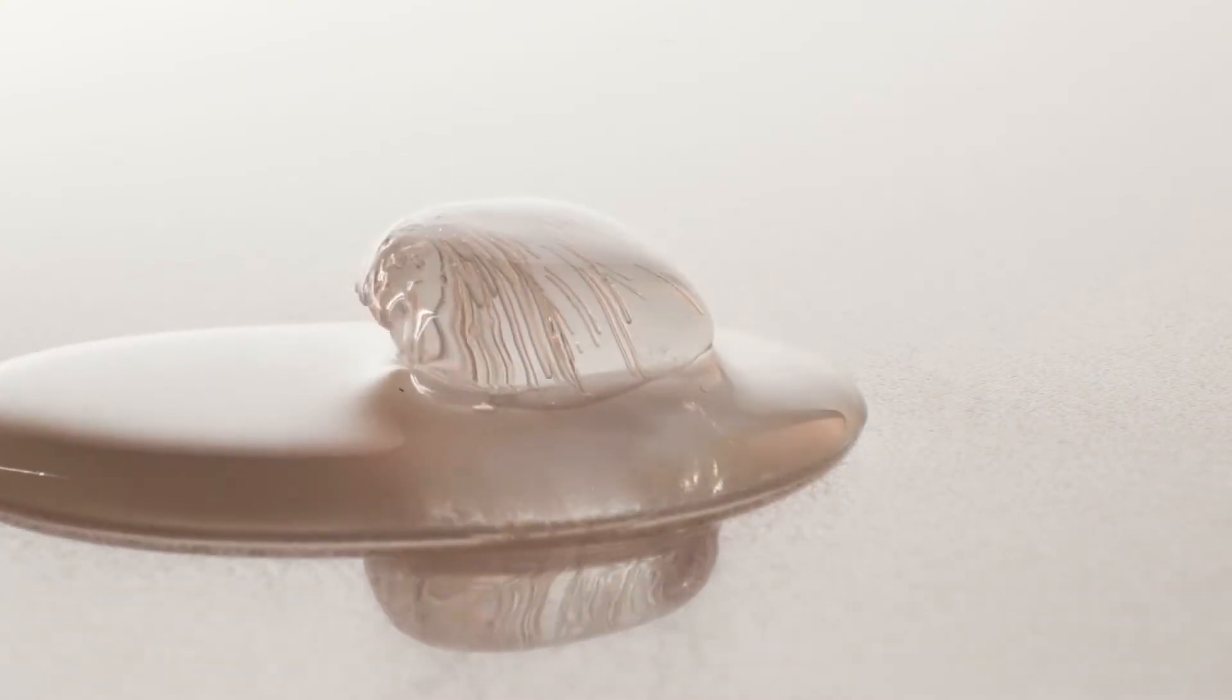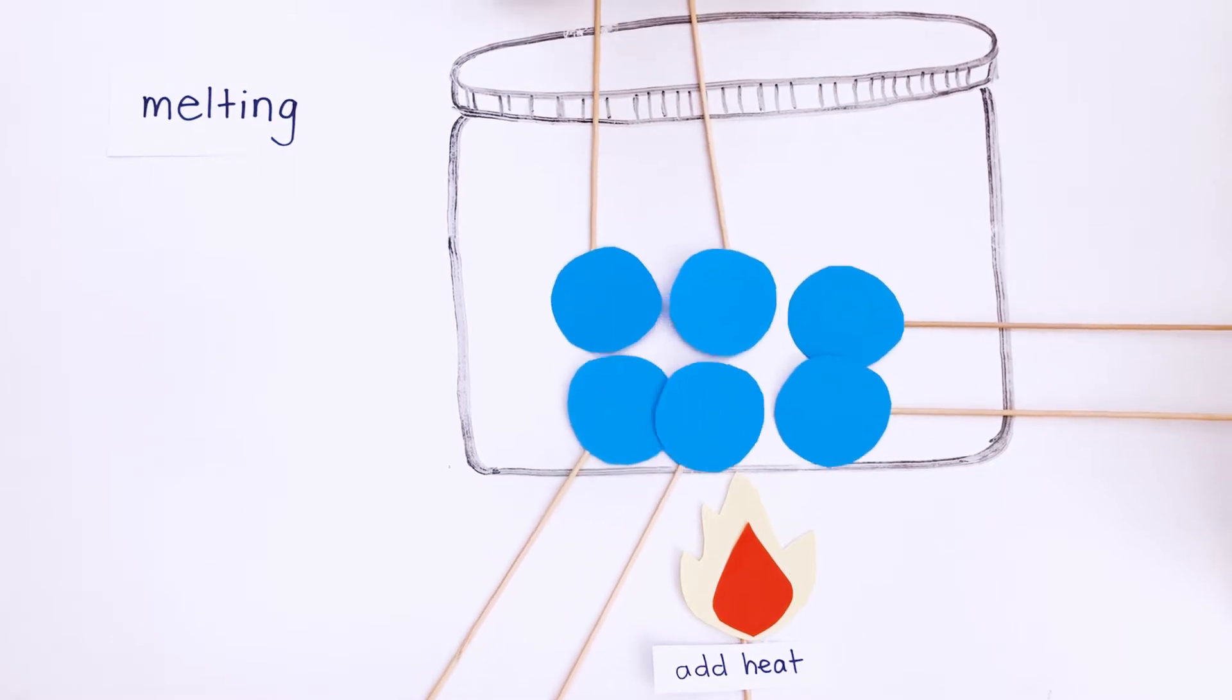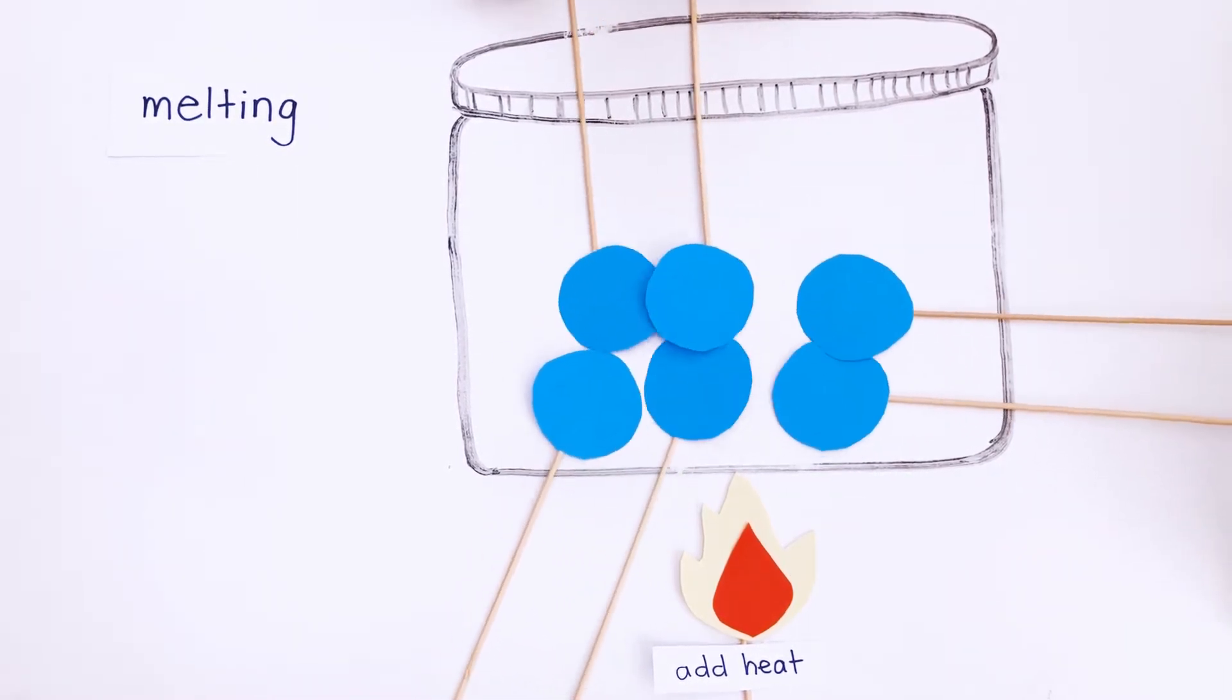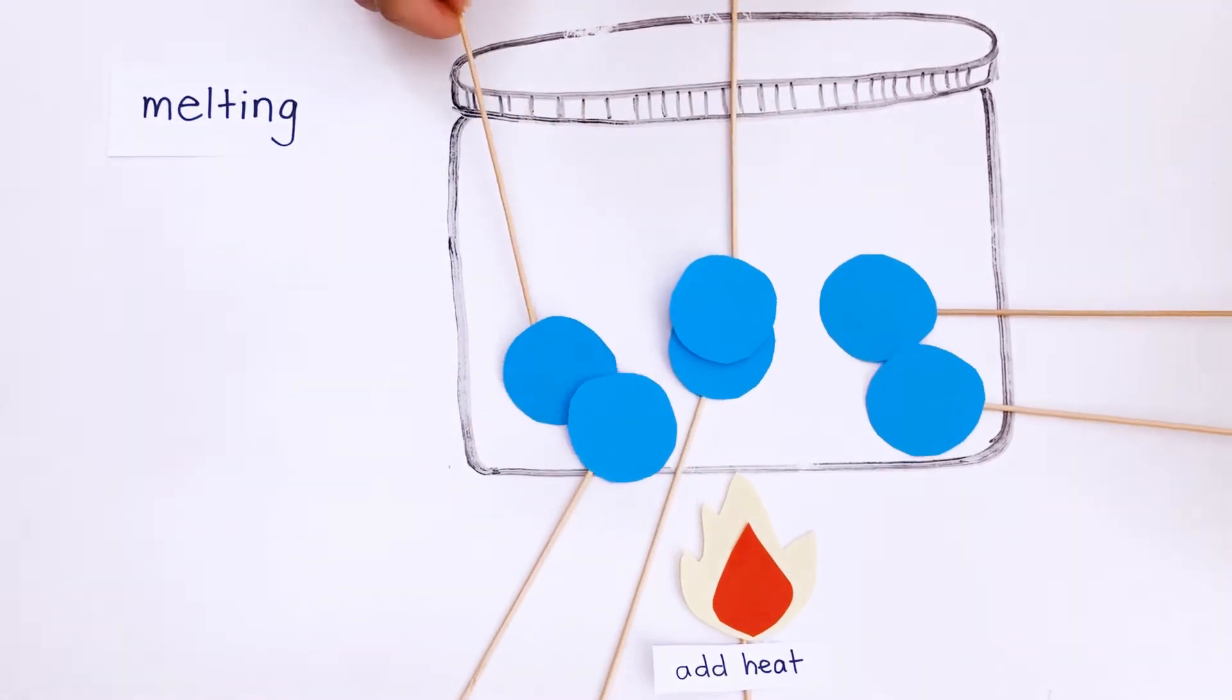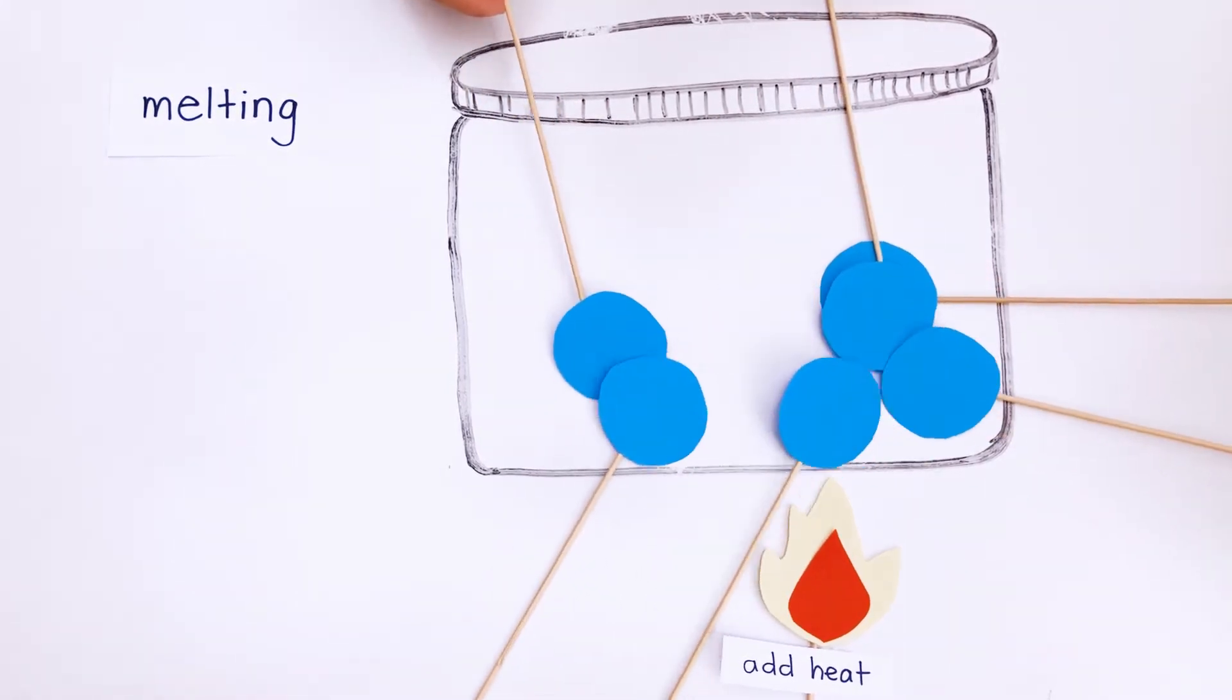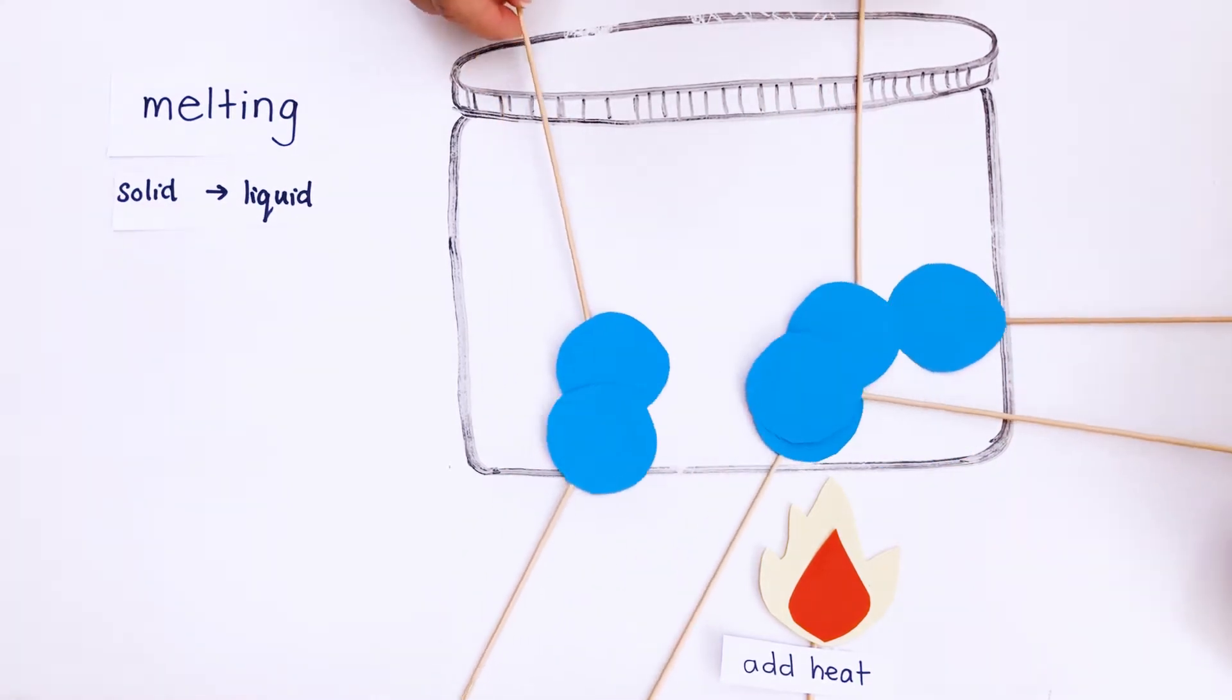Melting. Melting happens because particles in the solid start to vibrate more. Eventually the movement is so strong that the attraction between particles can no longer keep them in fixed positions. The particles begin to move around each other allowing the substance to flow. The solid has turned into a liquid.